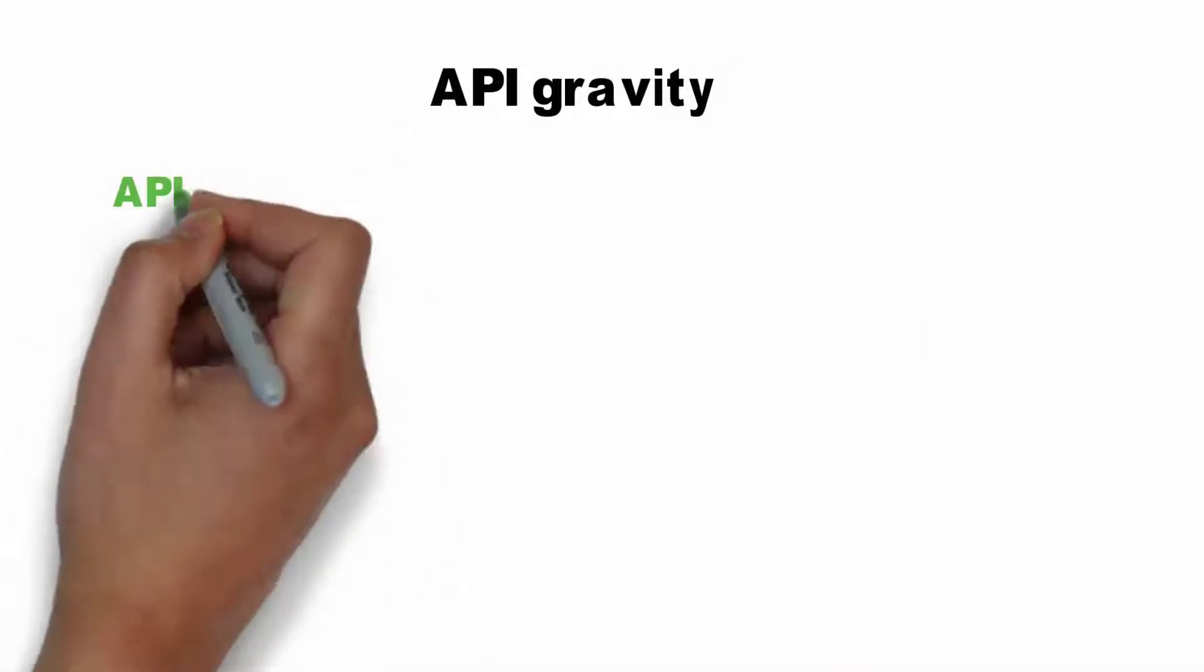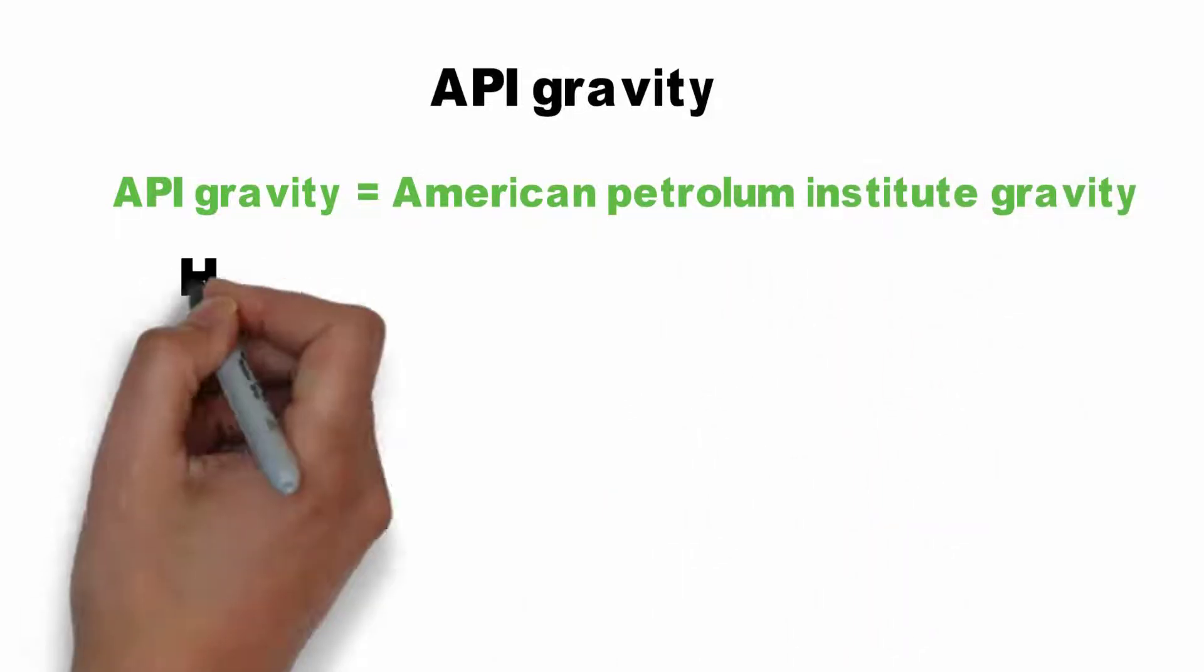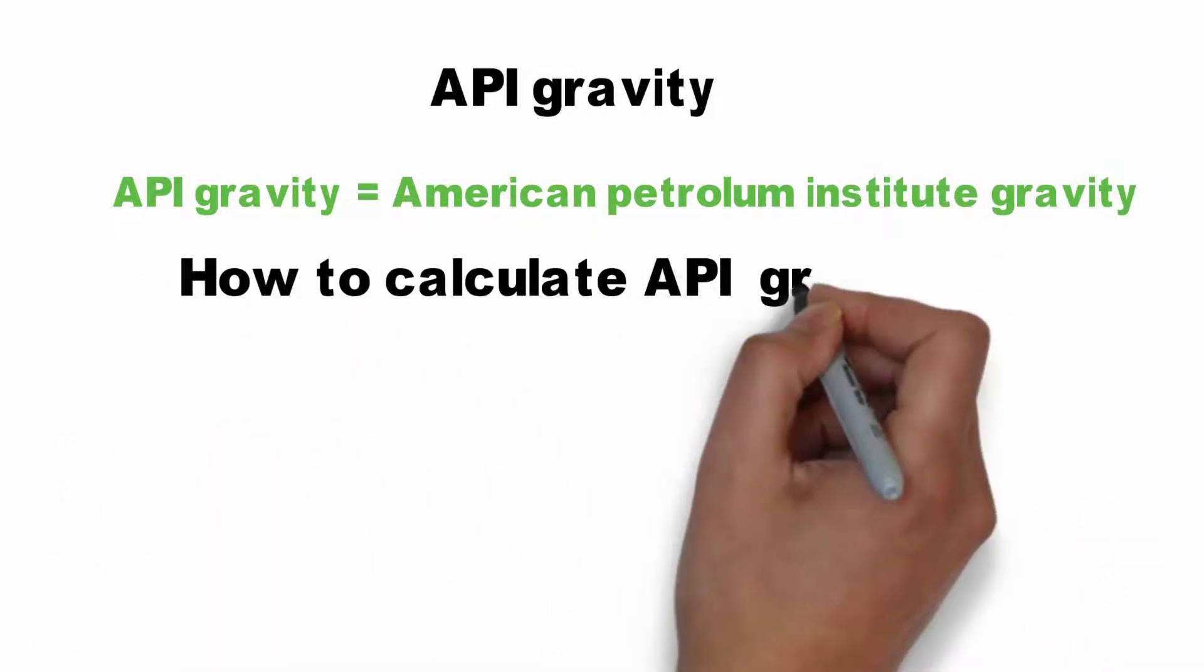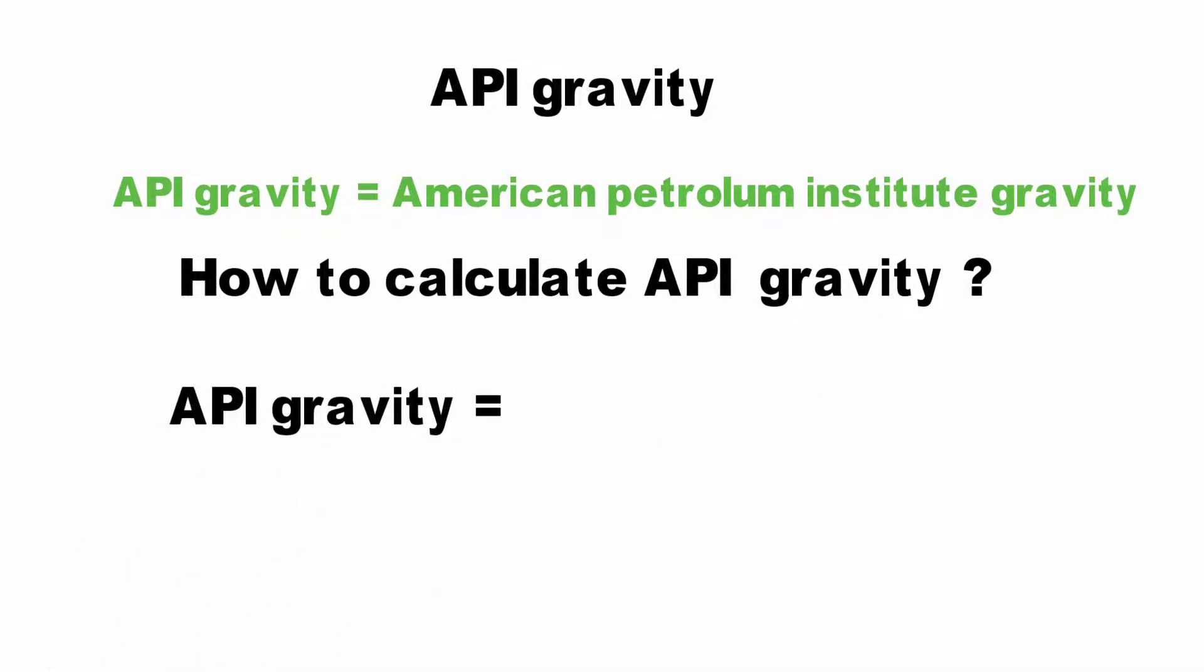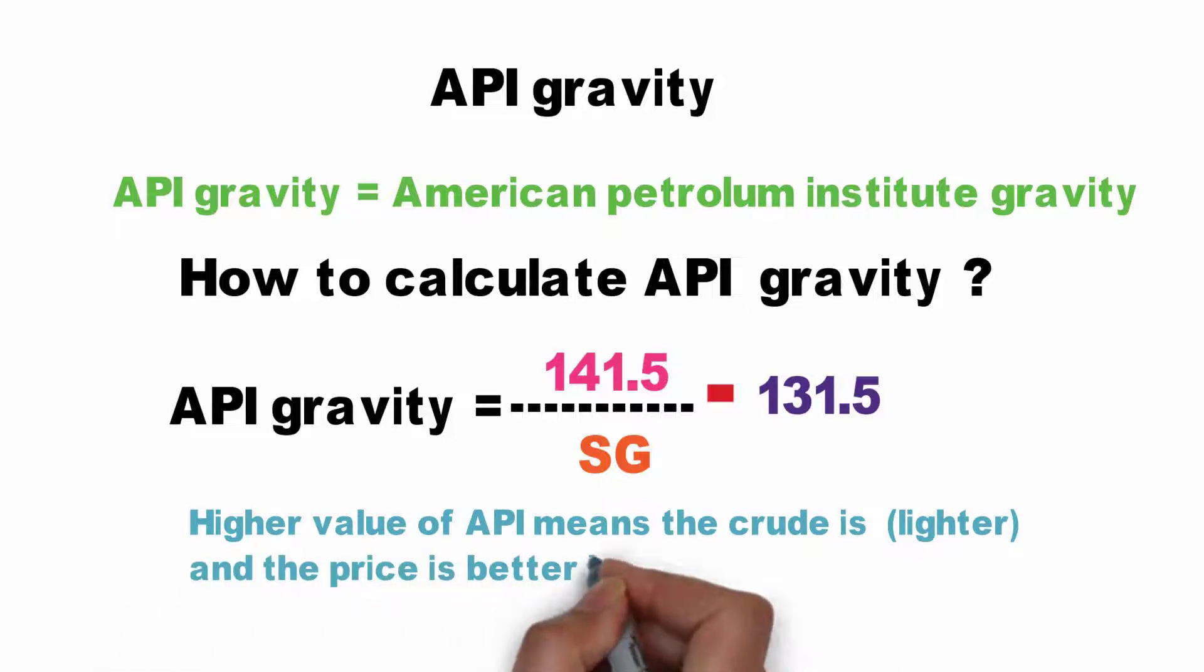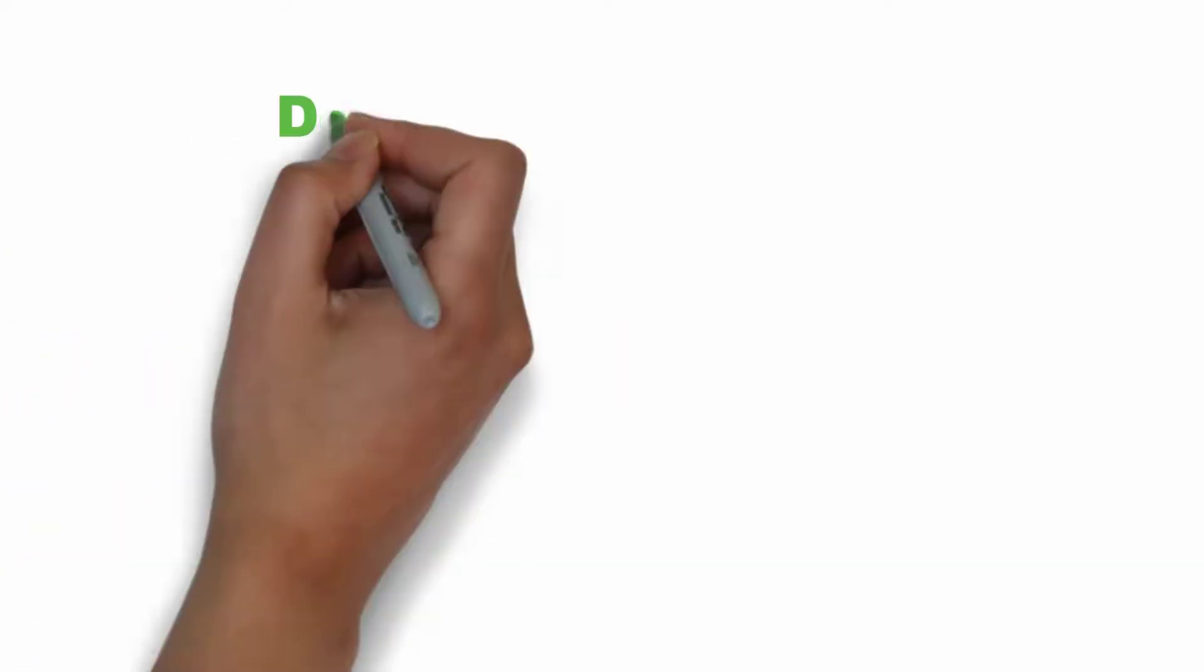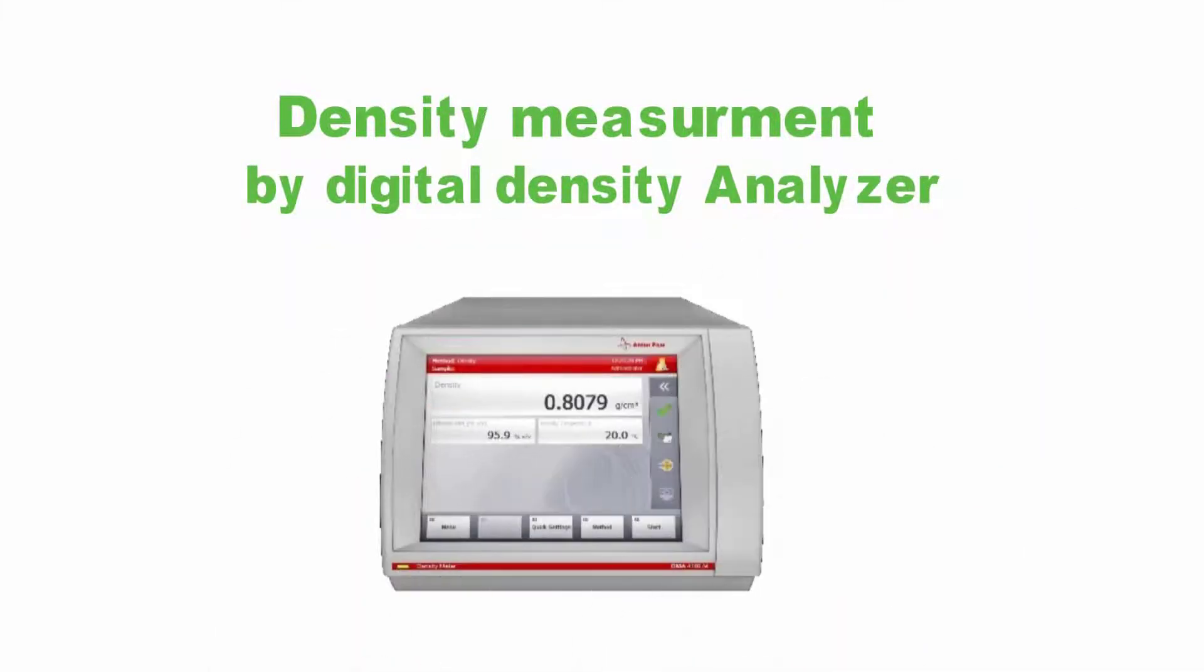Now let's find out what is API gravity. API stands for American Petroleum Institute, and how to calculate the API gravity is by using the below equation: API gravity equals 141.5 divided by specific gravity minus 131.5. The higher value of API means the crude oil is lighter and the price is better in terms of money.